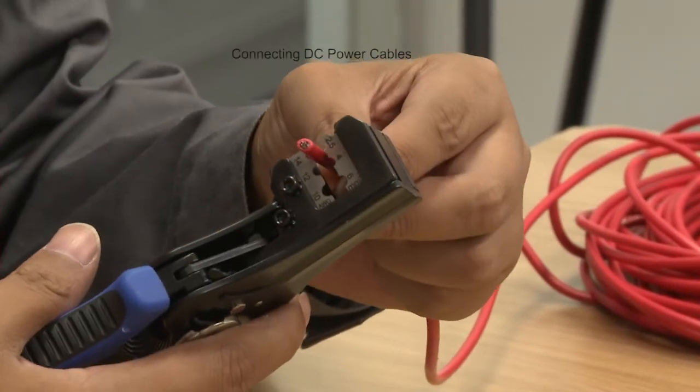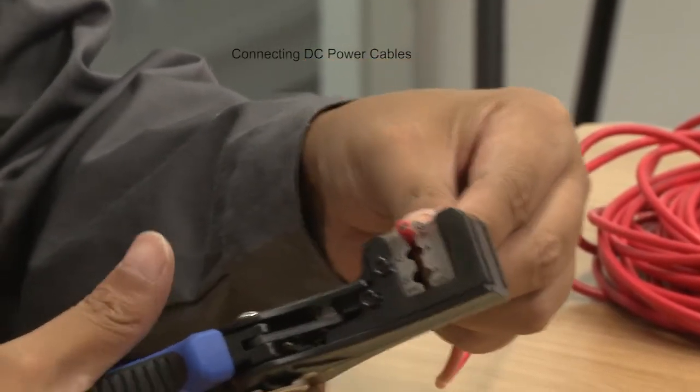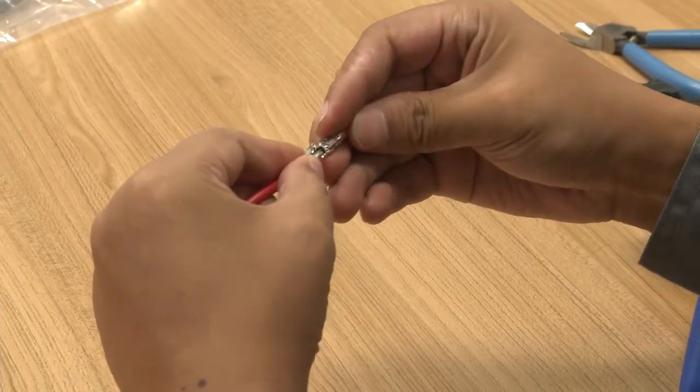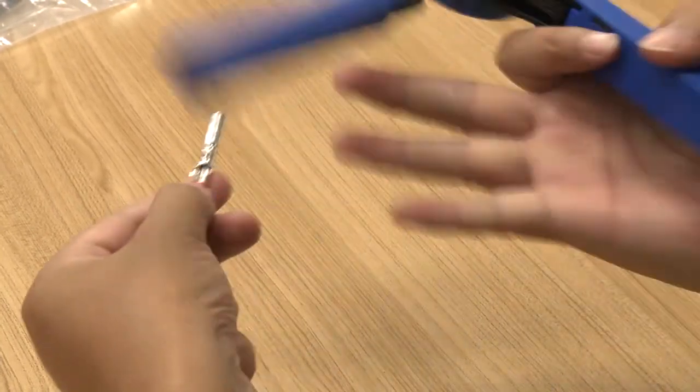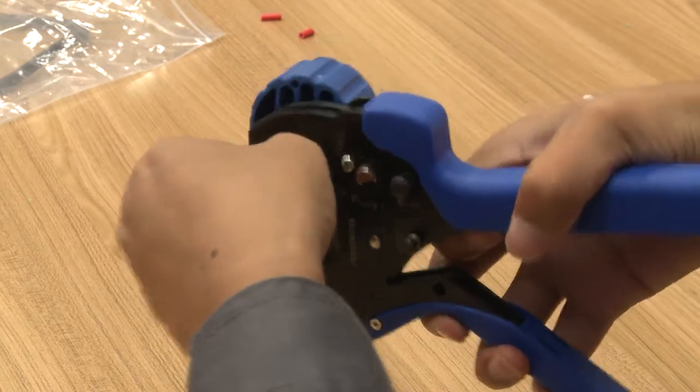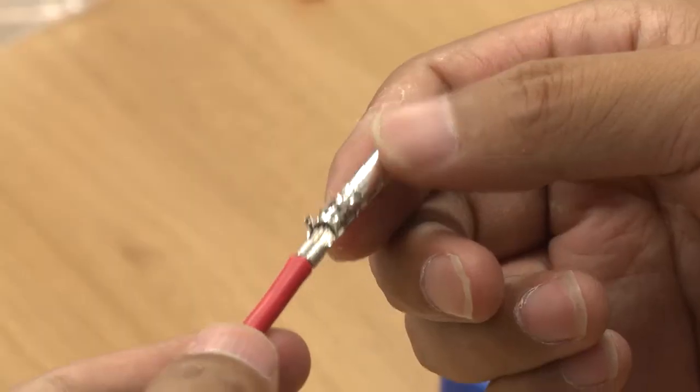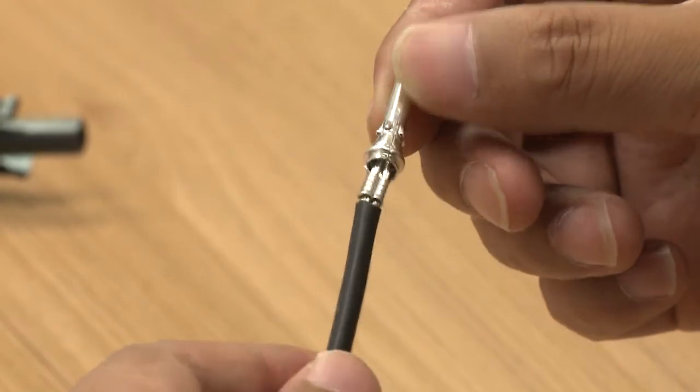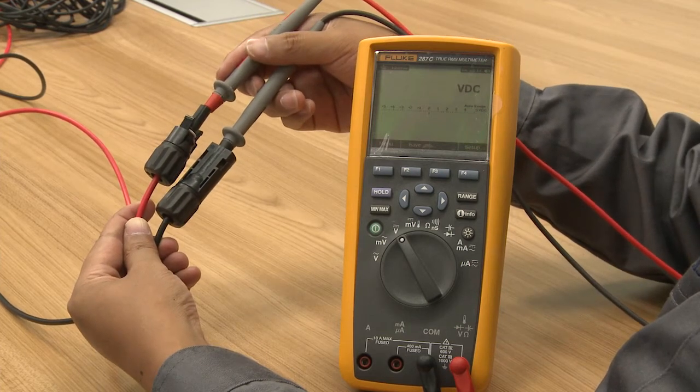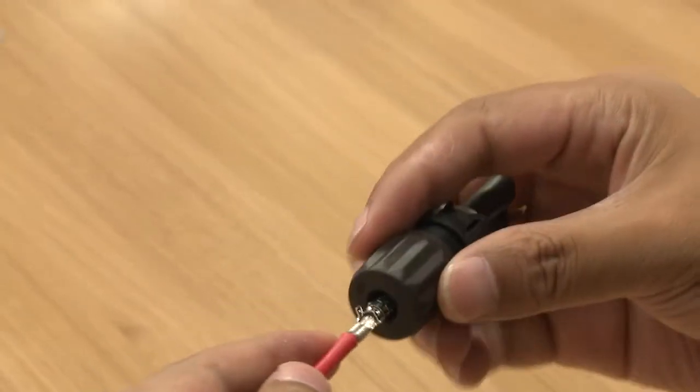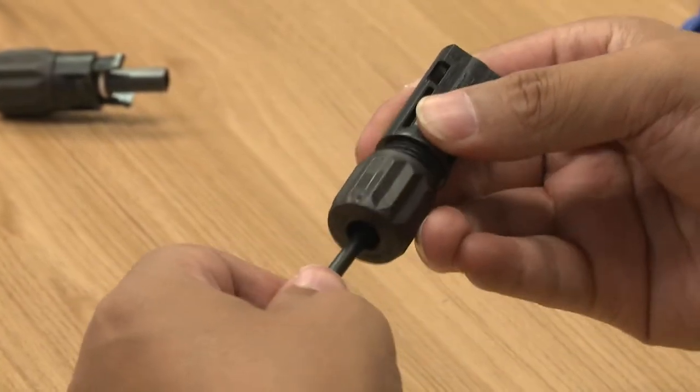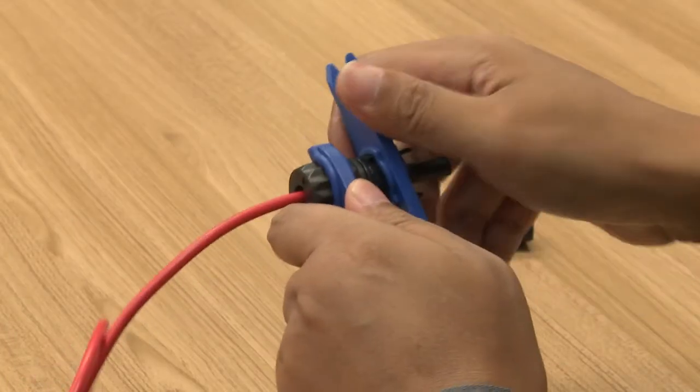Remove an appropriate length of the insulation layer from wires of the DC input power cables using a wire stripper. Insert the exposed area of the DC input cable wires into the metal terminals of the positive and negative connectors respectively and crimp them using the crimping pliers. Measure the current with a multimeter to ensure that the current of all DC terminals is within the normal range. Insert the crimped positive and negative power cables into the corresponding positive and negative connectors. Tighten the waterproof nuts using tightening tool.